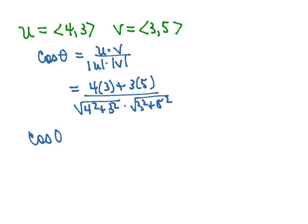So we have that the cosine of theta is equal to 12 plus 15, and 12 plus 15 is 27, divided by the square root of 16 plus 9 would be the square root of 25, which is 5. And that's going to be times the square root of 9 plus 25, which is 34.